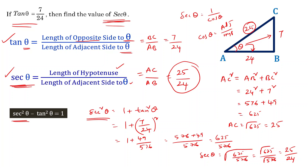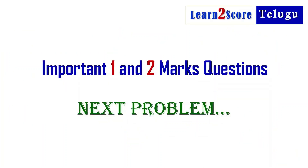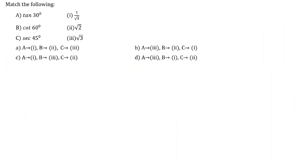Trigonometric identities are the last topic in this chapter. Next, match the following: tan 30 degrees, cot 30 degrees, sec 45 degrees with the values 1 by root 3, root 2, and root 3. These involve specific angle values from the trigonometric ratios table, which covers 0, 30, 45, 60, and 90 degrees.